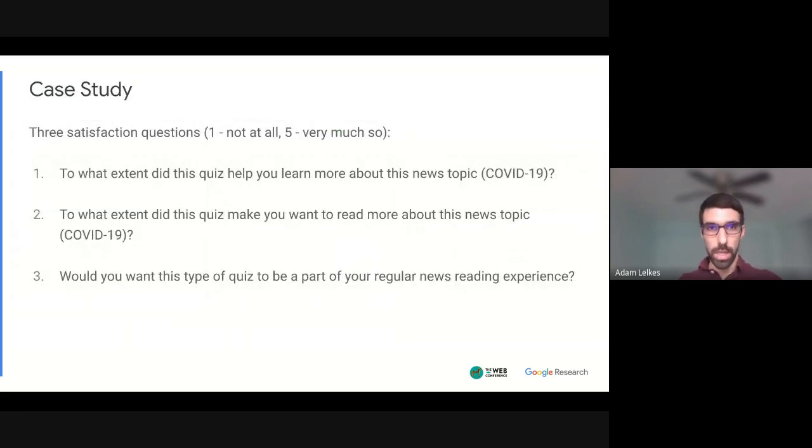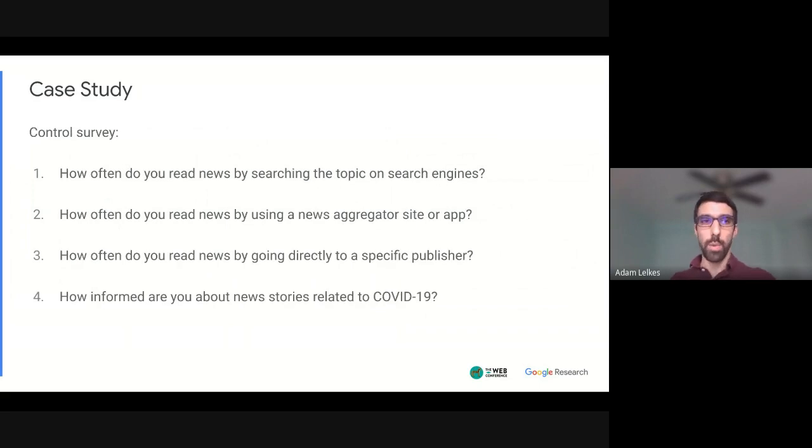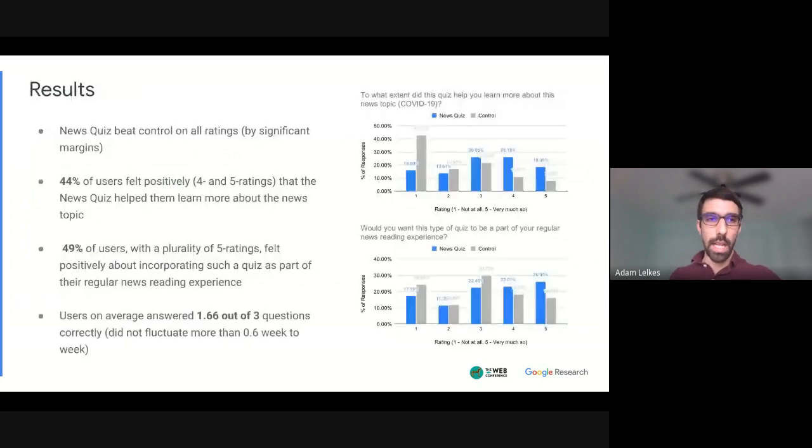And along with these questions, we asked three satisfaction questions about like how much users like our quiz, like does it make them want to learn more about the news topic, read more about it? And would they want to see this as a part of their regular news reading experience? Also for comparison, we ran a baseline control survey that was more similar to the typical user surveys that users of the Google service platform would encounter, that just asked about their news reading habits and also ask them to self assess their news informedness. And the results show that we beat the control survey by a significant margin on all of the satisfaction questions. And the average rate of correct answers was little over half consistent with what we've seen in the distractor evaluations.